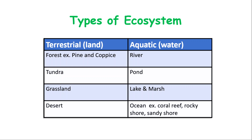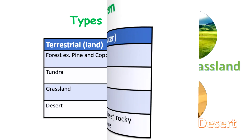Now let's look at some types of ecosystem. Generally, ecosystems can be broken down into two main types: the terrestrial ecosystem and the aquatic ecosystem. Terrestrial ecosystems are any ecosystems on land, while aquatic ecosystems involve water or the ocean — aquatic is also referred to as marine. Examples of terrestrial ecosystems include pine forest, copies forest, tundra, grassland, and desert. Aquatic ecosystems include rivers, ponds, lakes, marshes, and the ocean.